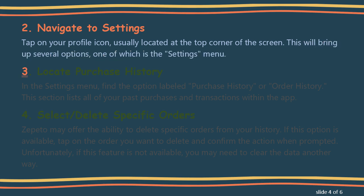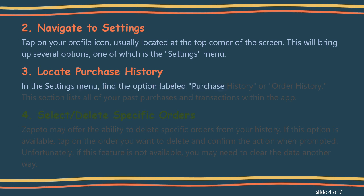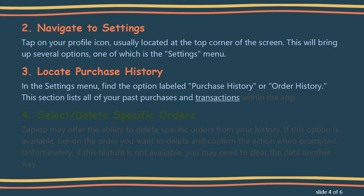Step 3: Locate Purchase History. In the Settings menu, find the option labeled Purchase History or Order History. This section lists all of your past purchases and transactions within the app.